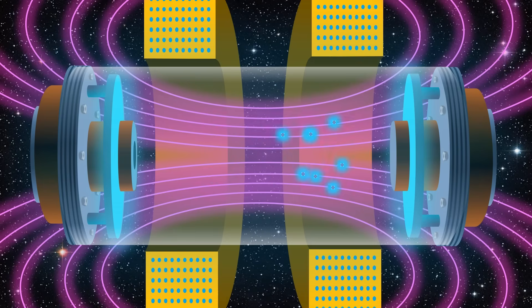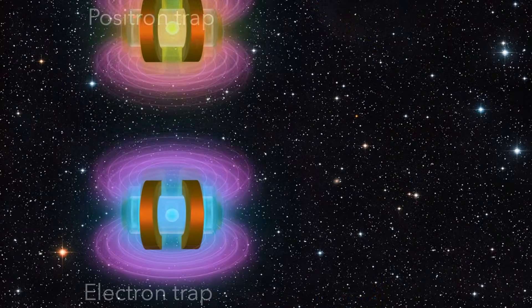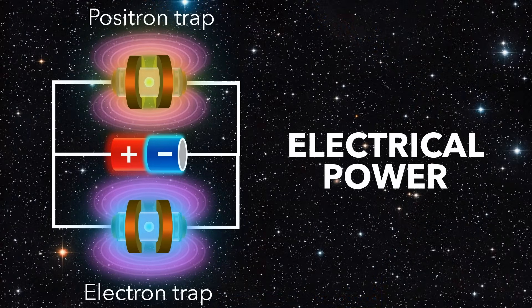A second penning trap uses a similar arrangement to store the normal matter electrons. Both traps use a lot of electrical power to generate the force fields.